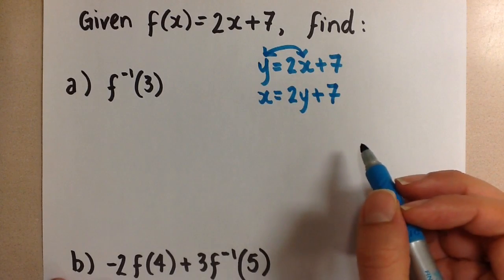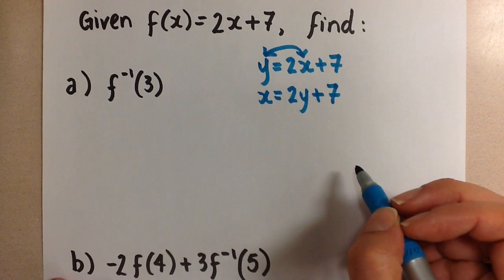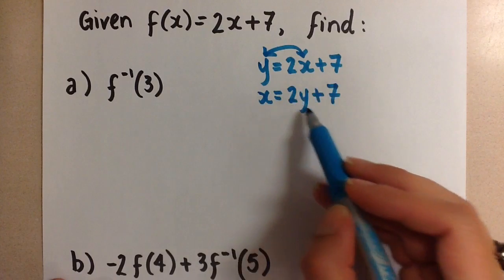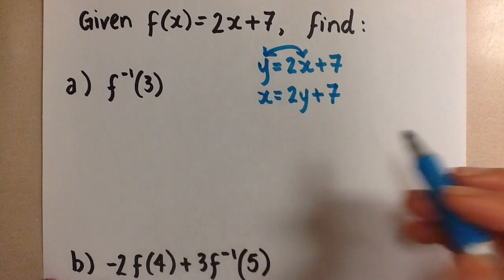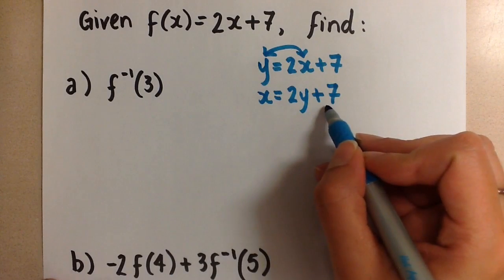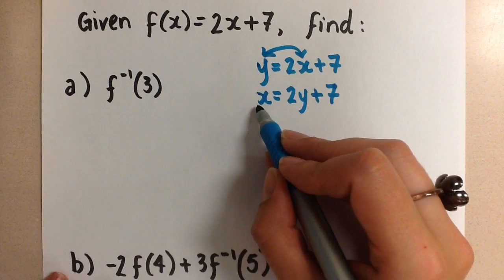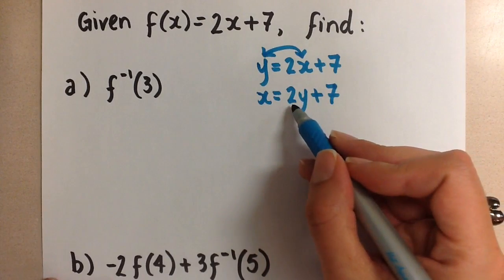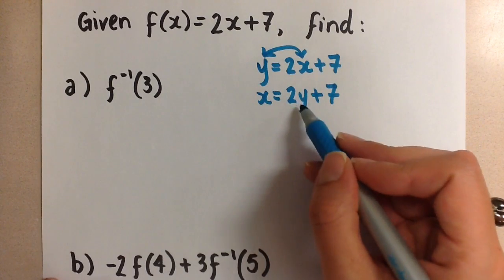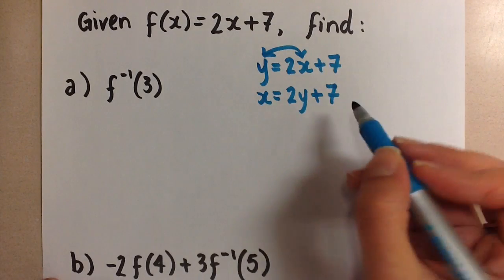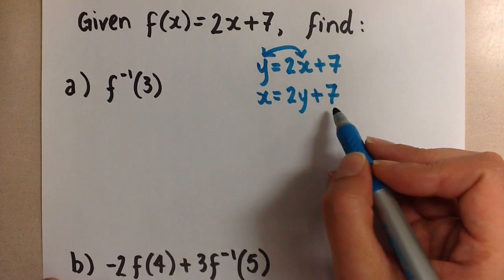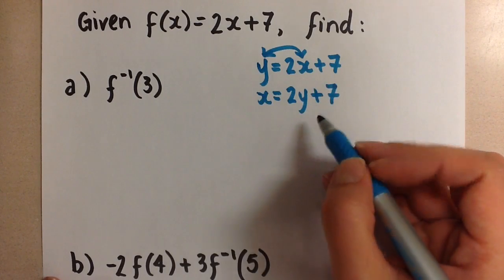So here we do our inverse operations to undo the operations that are being done here on the y variable and get them over to the other side. So if we have a plus 7, we're going to undo it by doing minus 7 over on the other side. And if we have the multiplied by 2, we're going to divide by 2 to get the y by itself. So we're doing the backwards order of operations. So we have to get rid of the plus 7 first.